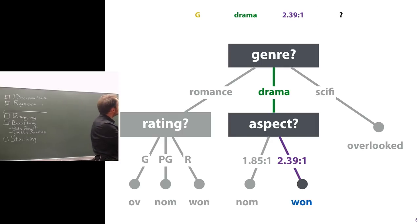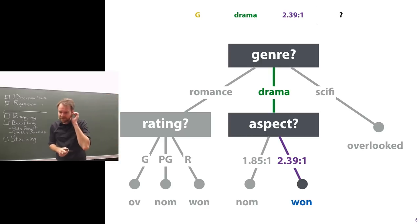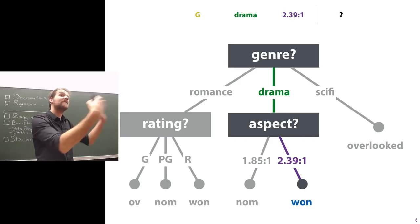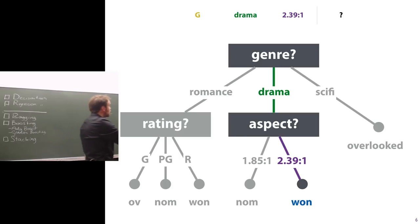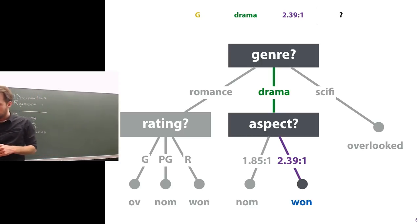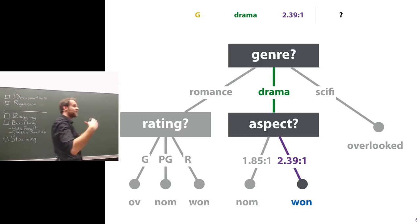If we get a new instance — a G-rated drama film with a 2.39 aspect ratio — first we ask the genre, which is drama, so we end up at that node. Then we ask the aspect ratio, which is 2.39, so we predict that this movie will win an Oscar. That's how the model works once it's trained.